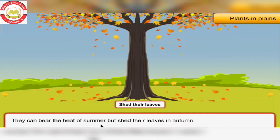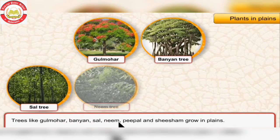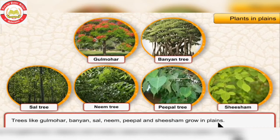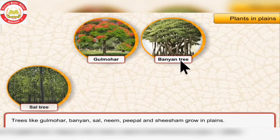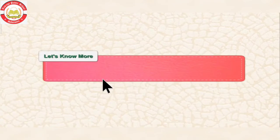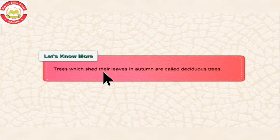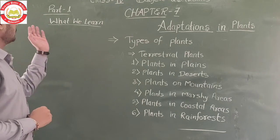In autumn, these trees shed their leaves. These trees grow new leaves in the spring. Trees like Gulmohar, Banyan, Sal, Neem, and Peepal grow in plains. Trees which shed their leaves in autumn are called deciduous trees.